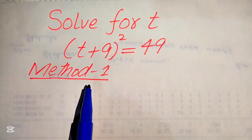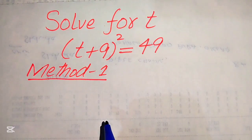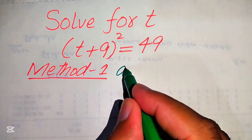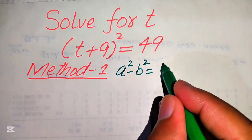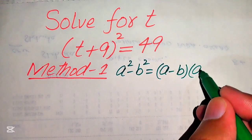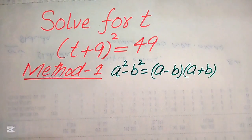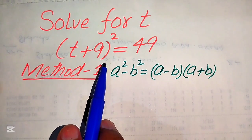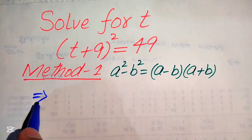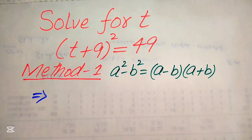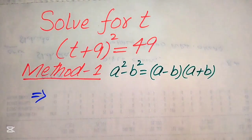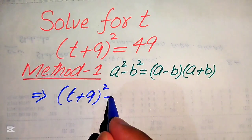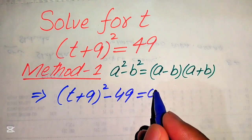Now we move forward and solve this problem using the first method. In the first method, we use the algebraic formula: a² - b² = (a - b)(a + b). According to this formula, we first need to write the given question in standard form. We move 49 to the left-hand side, giving us (t + 9)² - 49 = 0.